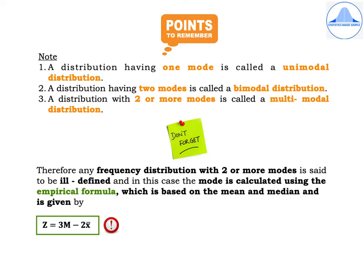Some important points to remember: A distribution having one mode is called unimodal. A distribution having two modes is called bimodal. A distribution with two or more modes is called multimodal. A frequency distribution with two or more modes is said to be ill-defined, and in this case the mode is calculated using the empirical formula: Z = 3M − 2X̄, where M is the median and X̄ is the arithmetic mean.